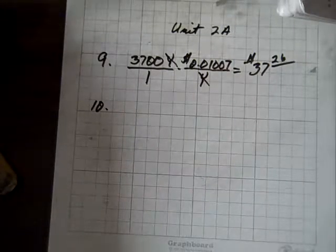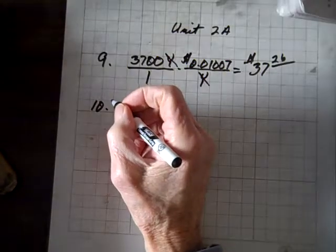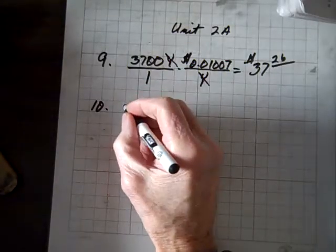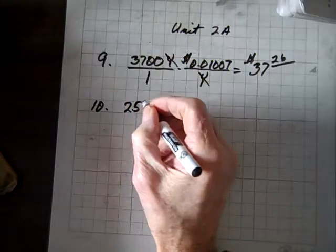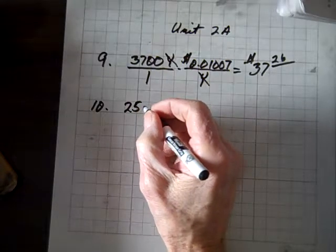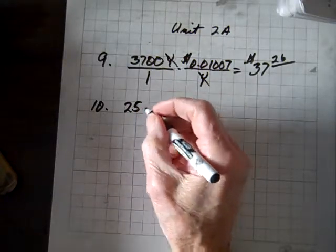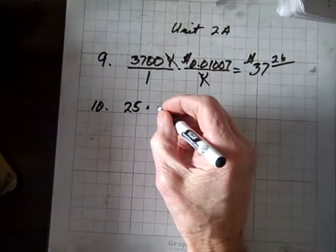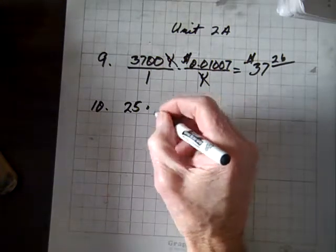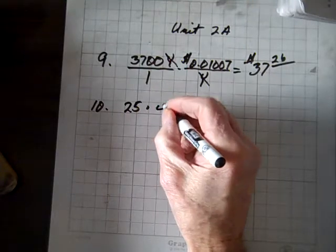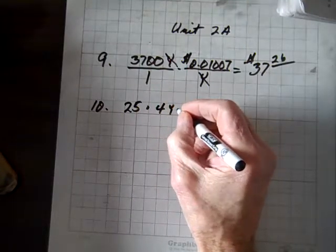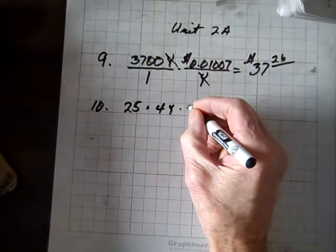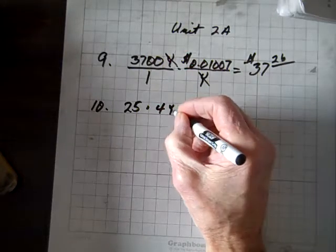For number 10, it says we have 25 rectangular plots, and the area of each plot, the dimensions are, 25 times the length and the width, because that's the area, 4 yards times 10 yards.